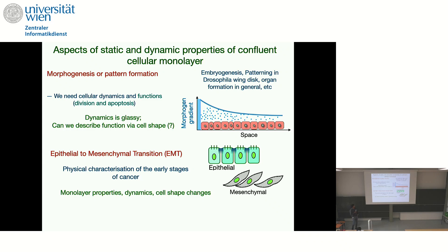The first long-term goal is morphogenesis or pattern formation. We are interested in problems such as embryogenesis, pattern formation in the endosclerial wing disc, or organ formation in general. For this purpose, we need both the cellular dynamics and functions — functions in the form of cell division and apoptosis.